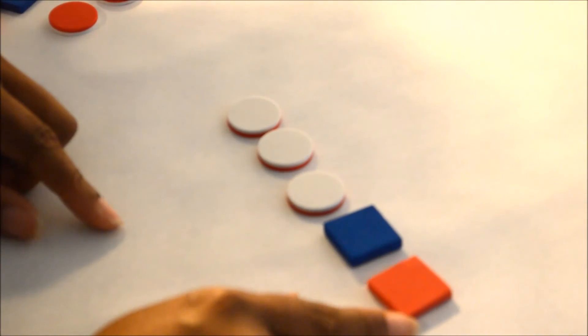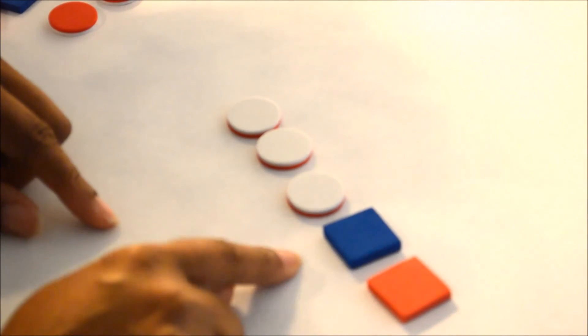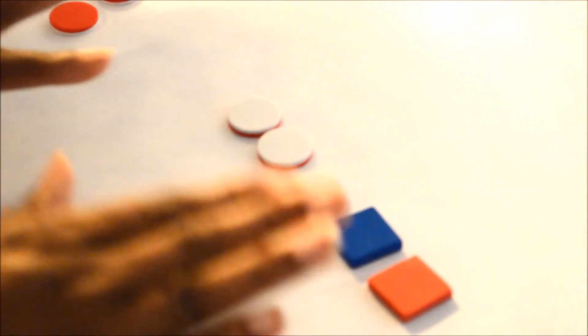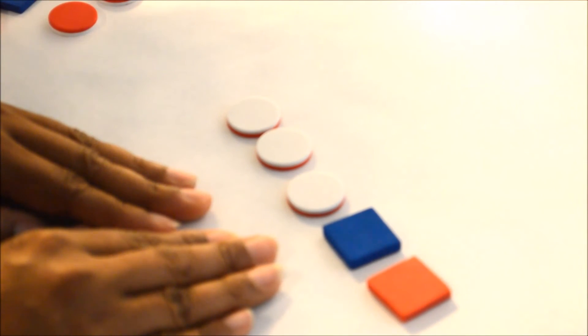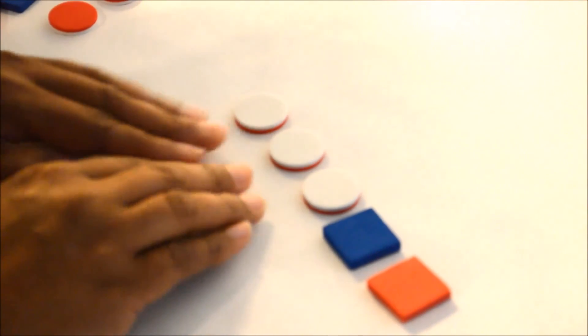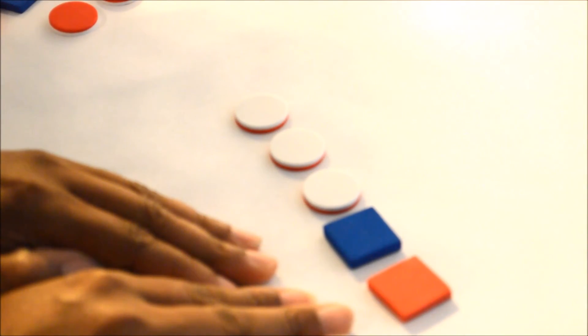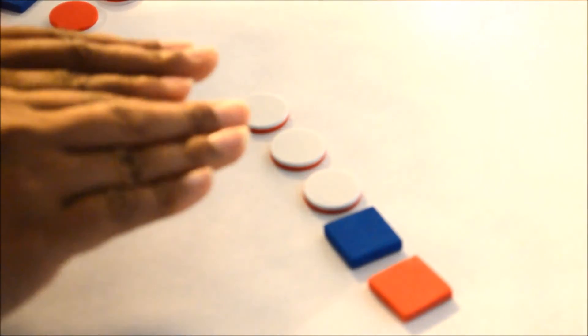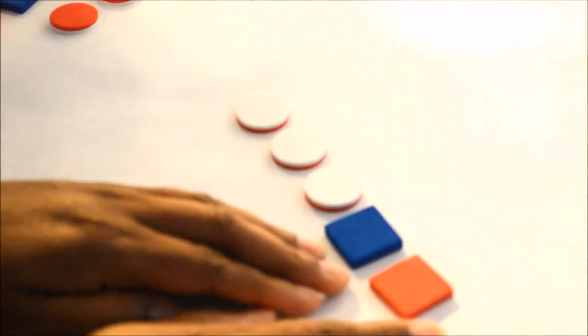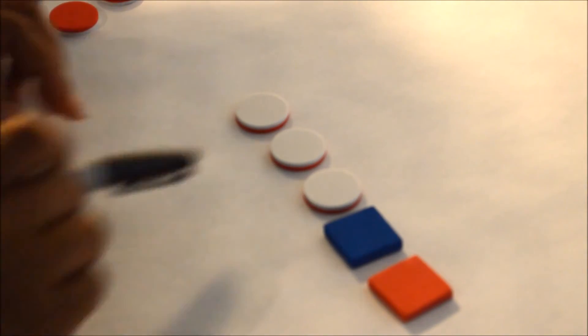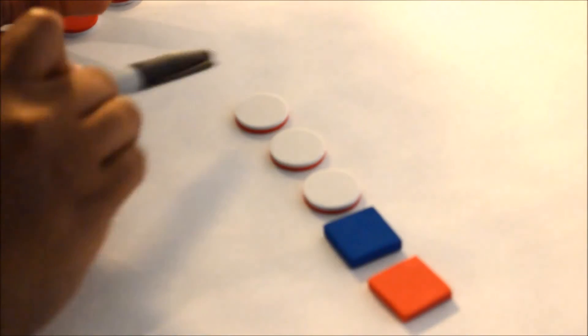But the question asks, what fractional part of the set are squares? So you could say two fifths of the fractional part are squares. And it has to be reasonable. A lot of my fifth graders don't even understand about reasonable. It has to be reasonable because if three fifths are two-colored counters and two fifths are squares, three plus two, three fifths plus two fifths equals five fifths. So it's reasonable because we know that three plus two equals five and we have a total of five.